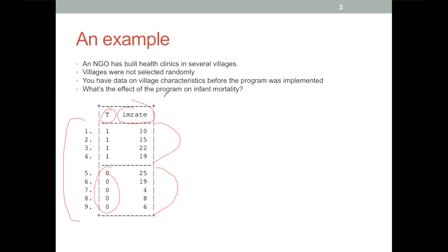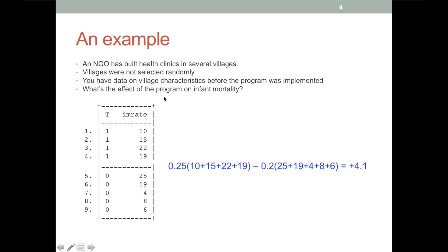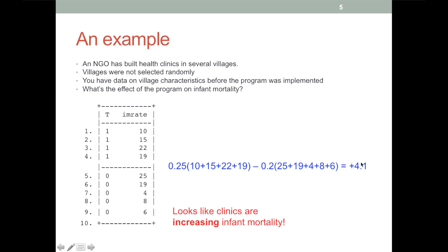One way to estimate the effects of the program would be to simply compare the average infant mortality rate in the treatment villages to that in the control villages. When we do this, we get the average in the treatment villages and the average in the control villages, and when we difference them, we get an effect of 4.1. According to this estimate, clinics are increasing infant mortality. There's an obvious problem here, since the villages that got the clinics almost certainly had higher infant mortality before the program was implemented.